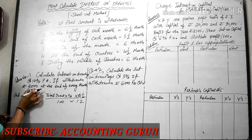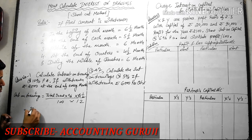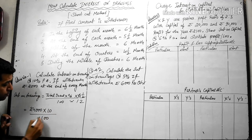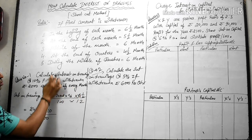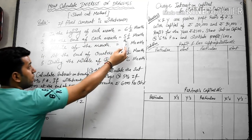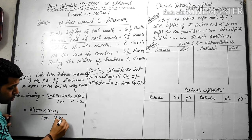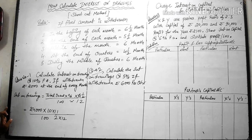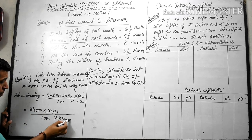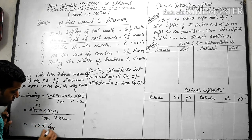In this question, you can see 2,000 per month is withdrawn, so in 12 months the total withdrawal is 2,000 × 12 = 24,000. The percentage is 10%. Since the withdrawal is at the end of each month, we use 5.5 months, written as 11/2, and divide by 12 for the year. So: 24,000 × 10/100 × 11/2 ÷ 12 = Rs. 1,100. So he has to pay Rs. 1,100 as interest on drawings.